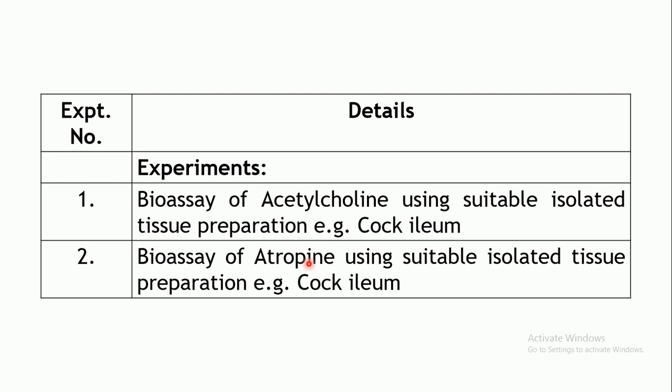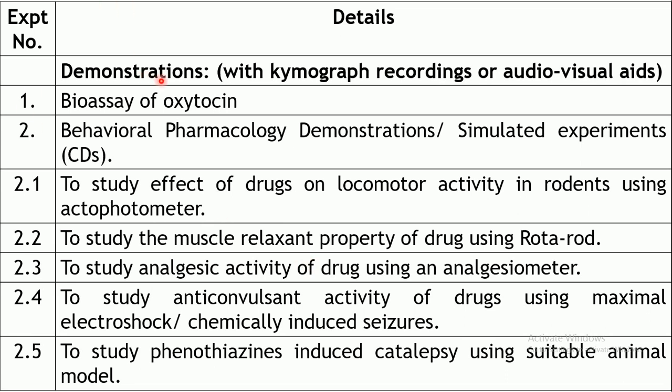These are the two experiments to be actually performed in the laboratory. The second part of the practical is demonstrations using chymograph recordings or audio-visual aids such as CDs. This includes two experiments: the first is the bioassay of oxytocin, a hormone secreted by the posterior pituitary gland that acts on the uterus, requiring a uterine preparation. Since one animal is required per student, this experiment is categorized under demonstration — certain recordings will be provided and you need to calculate the unknown concentration.